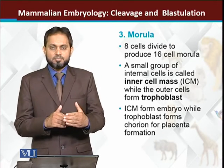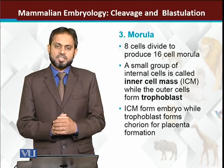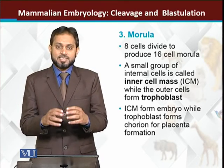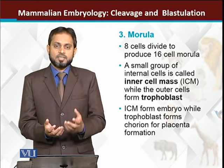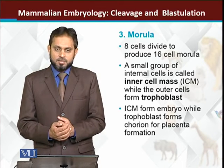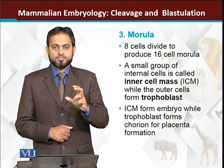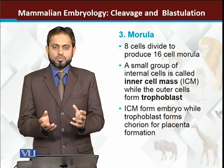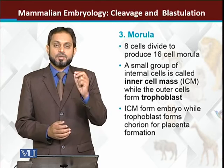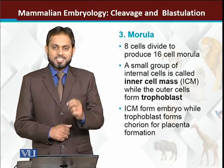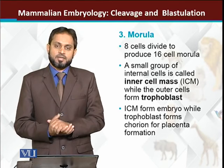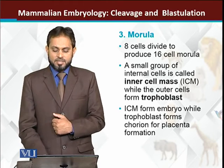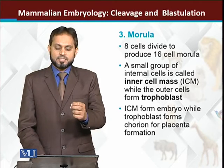After the eight-cell stage, the next stage is the sixteen-cell stage. The sixteen-cell stage is a solid form — a solid ball of cells called the morula. Inside the morula, there are two types of cells: the cells in the middle are called the inner cell mass (ICM), and the cells on the sides are called the trophoblast. The actual embryonic cells that will form the animal come from the inner cell mass, while the trophoblast forms only protective membranes and layers.